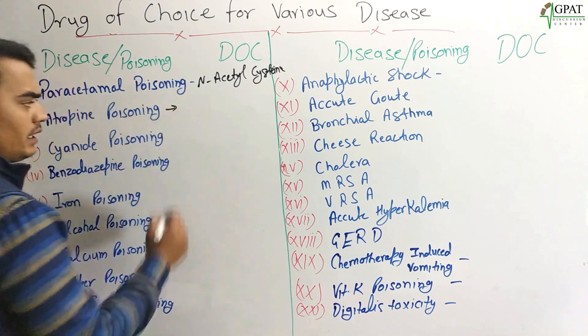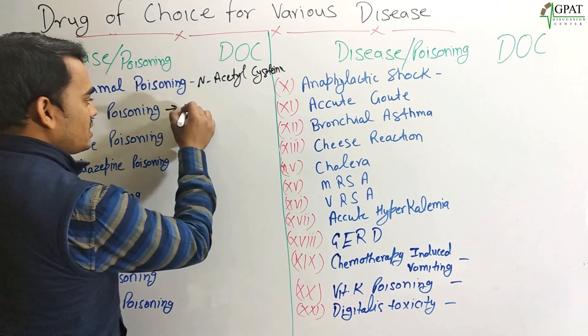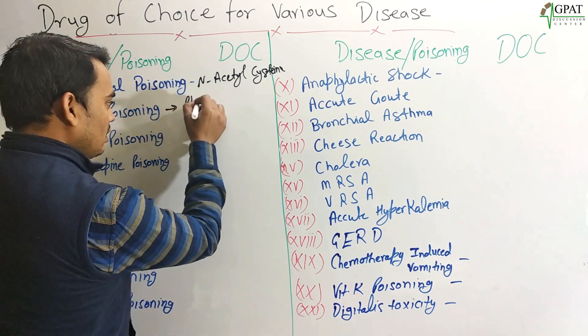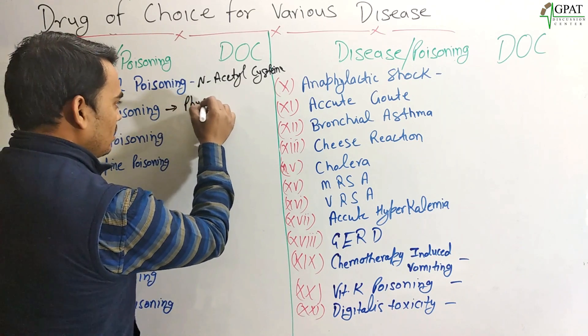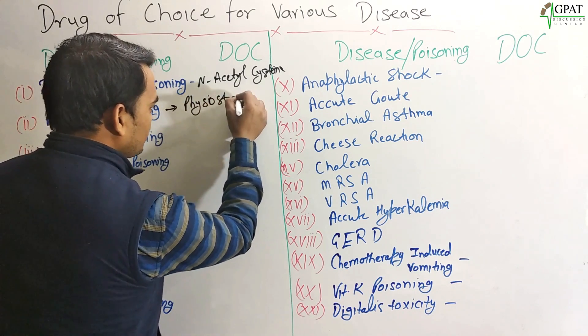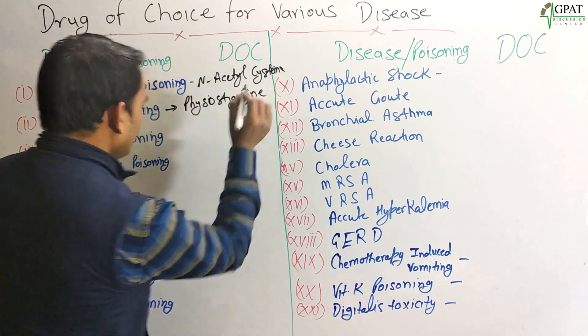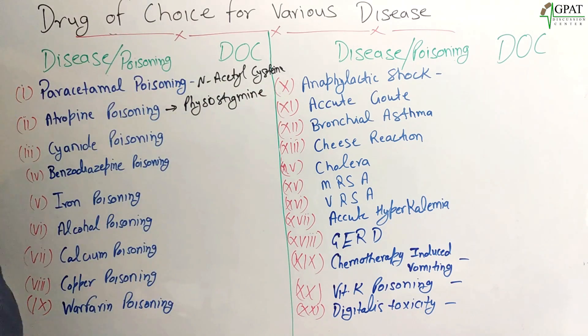For atropine poisoning, Physostigmine is always given. Physostigmine is the drug of choice.